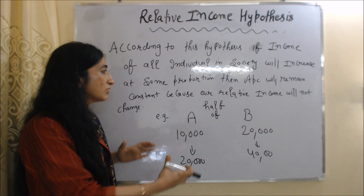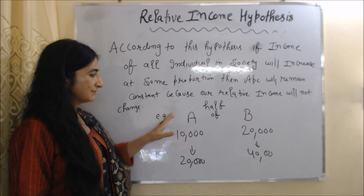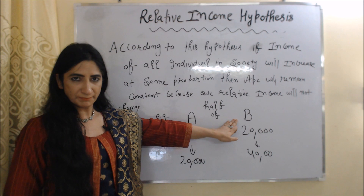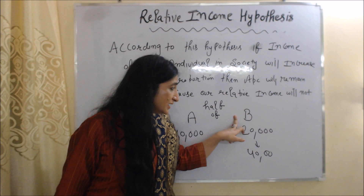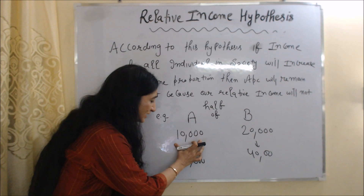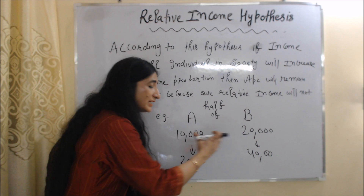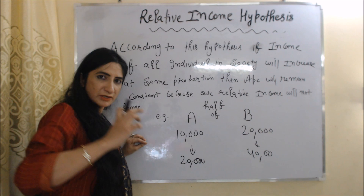For example, there are two persons in society, person A and person B. Income of person A is $10,000 per month and income of person B is $20,000 per month — income of A is half of income of B. Suppose income of A increases from $10,000 to $20,000, and income of B increases from $20,000 to $40,000. No doubt the absolute income of A increased, but still his relative income is the same — his income is still half of B's. If he wants to maintain his standard of living equal to B, he has to consume and spend more. That's why APC of A will not fall; it will remain constant.